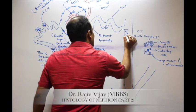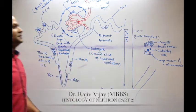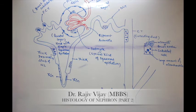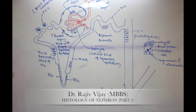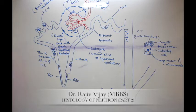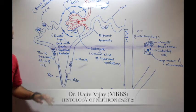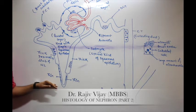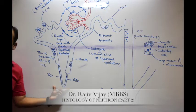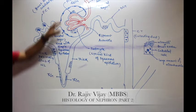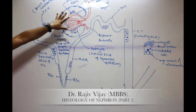In short, the whole nephron is mainly lined with cuboidal epithelium except at two places where squamous epithelium is present: in the thin segment of the loop of Henle and in Bowman's capsule.